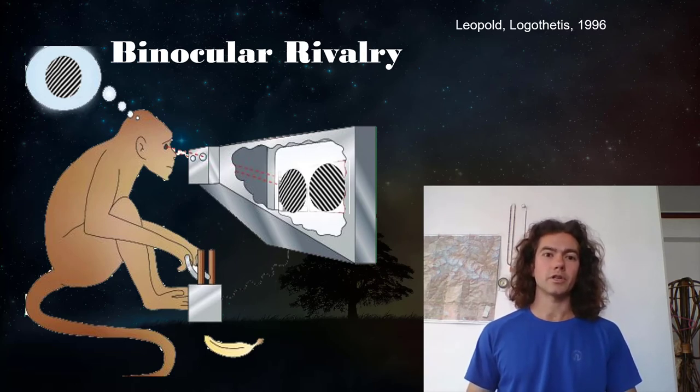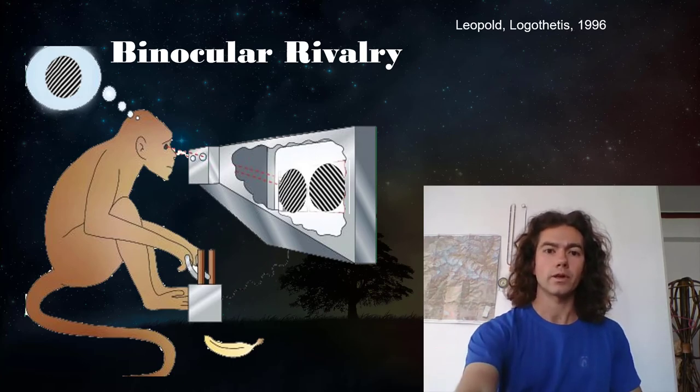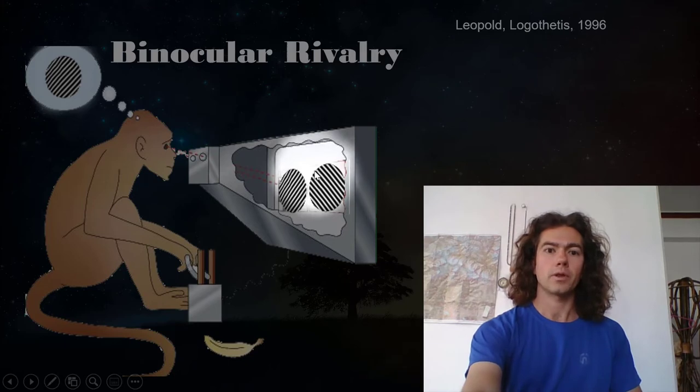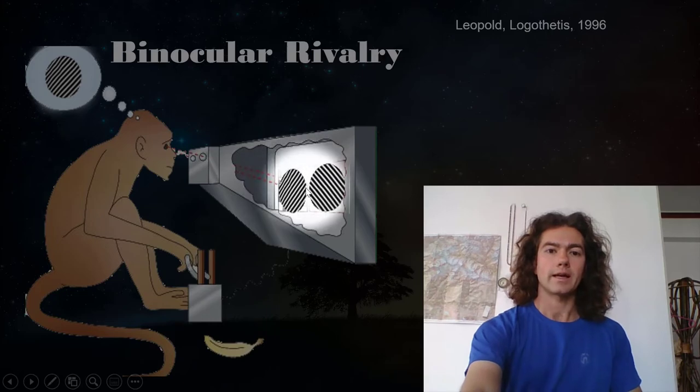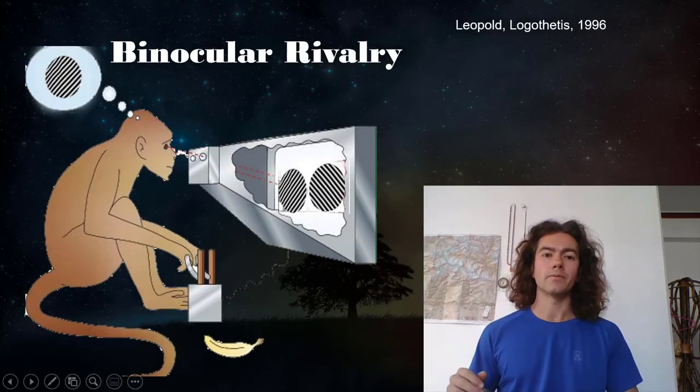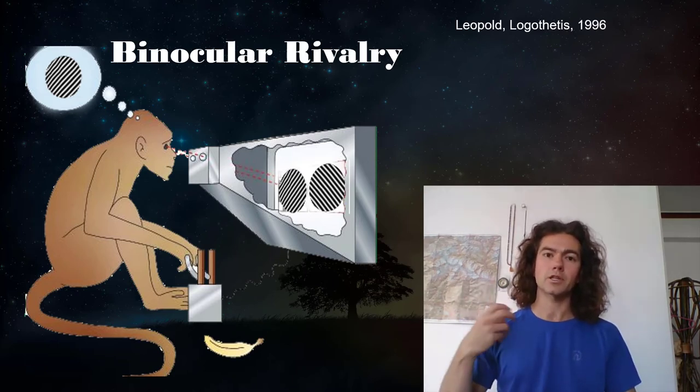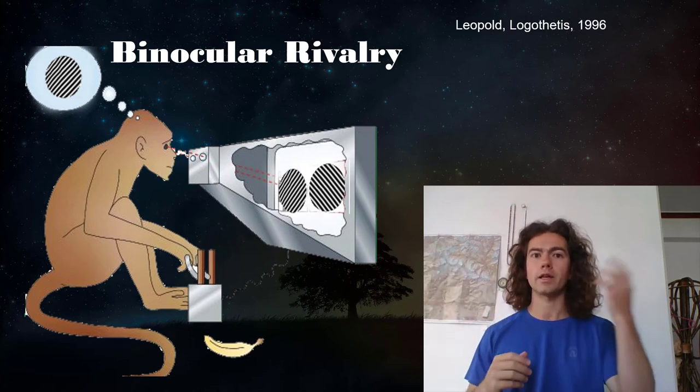So in the cartoon image here, you can see basically what the task is. So the monkey looks through a special device so that to his right eye, he's being presented with this stimulus, which is a grating where the diagonal lines go up and to the left. And then with his left eye, he's looking at a similar grating where the diagonals go up and to the right. And it turns out, this phenomenon of binocular rivalry, that when the two eyes are presented with competing images, the conscious percept, the thing that the participant is actually aware of, will alternate between the image shown to the right eye and the image shown to the left eye.